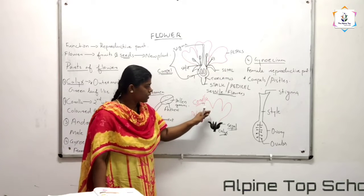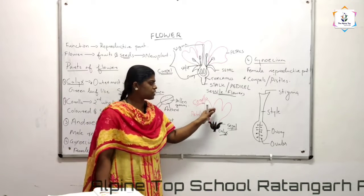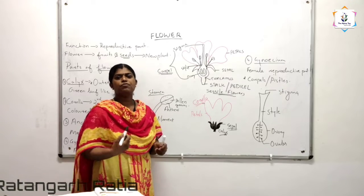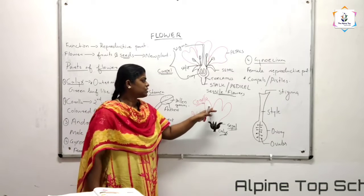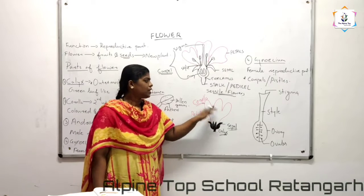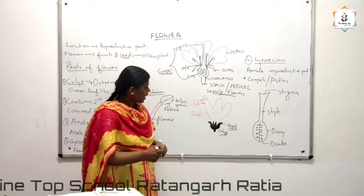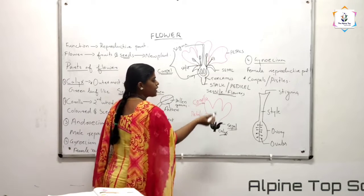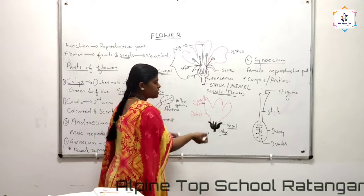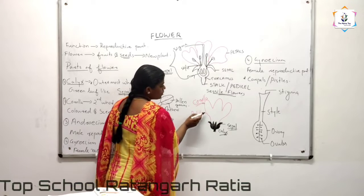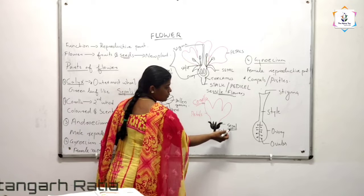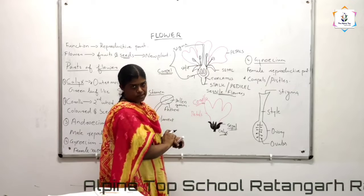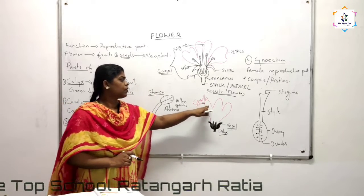Inner to the calyx we can see a colorful part of the flower. This colorful part also has some fragrance — the smell you are getting from the flower. The entire colorful portion we are calling it as corolla. That is the second whorl of the flower, and it is made with single petals. Just as sepals are forming calyx, petals are forming corolla. The single unit of corolla is known as petal.